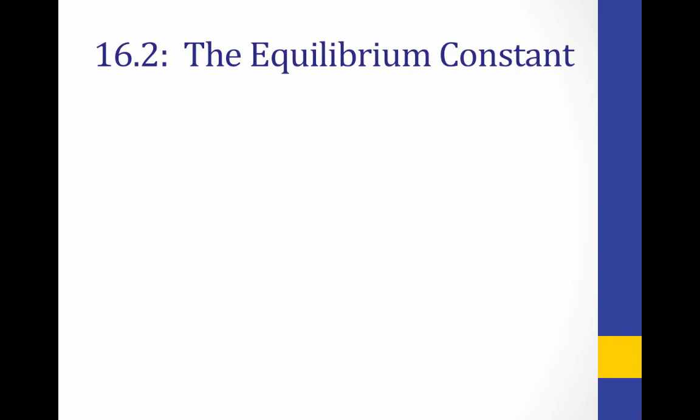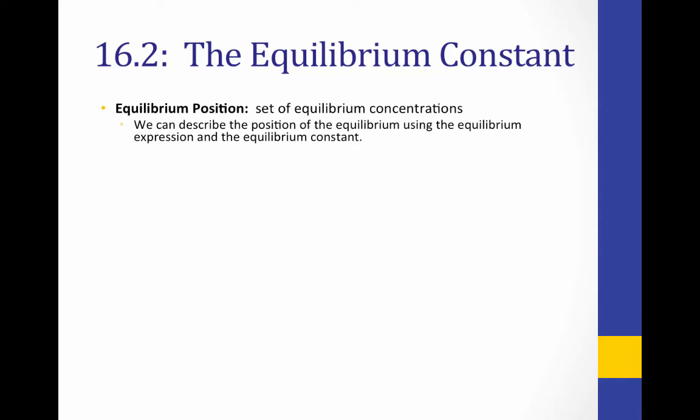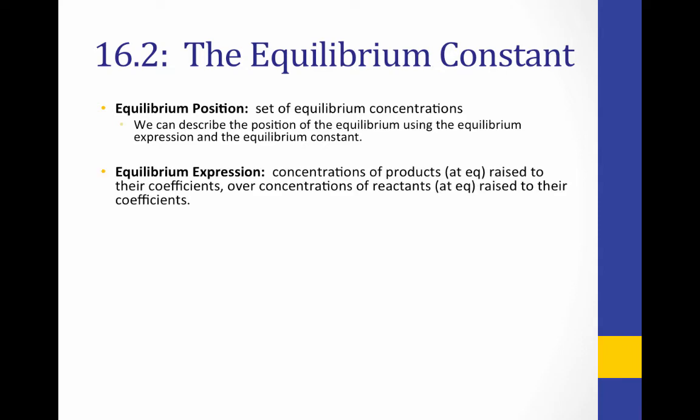We can quantify the state of a system at equilibrium using the equilibrium constant. It's important to differentiate between two ideas: first, the equilibrium position — this is the set of concentrations at equilibrium, meaning all of the concentrations of the reactants and the products when the system is at equilibrium. The equilibrium expression, on the other hand, is the concentration of products at equilibrium raised to their coefficients over the concentration of reactants at equilibrium raised to their coefficients. When writing an equilibrium expression, we only include gases and aqueous solutions — not solids, because solids don't have a variable concentration.